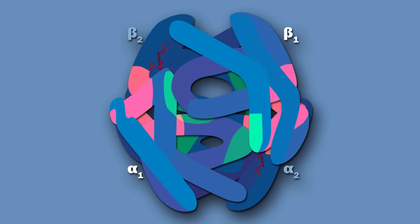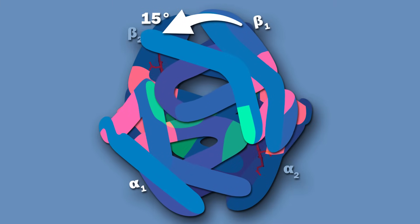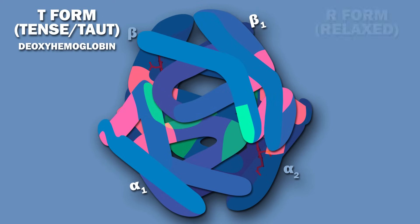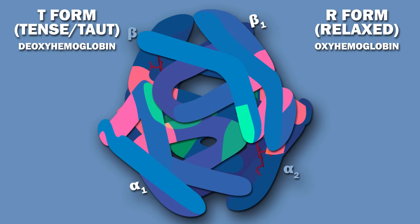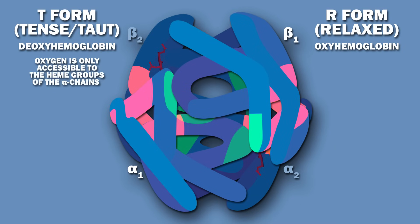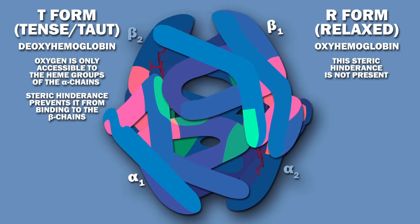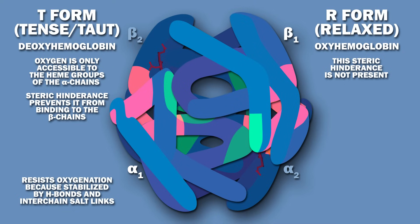When oxygen binds, the conformational change results in the dimeric halves rotating 15 degrees relative to one another. Hemoglobin's two conformations are called the T (for tense or taut) and R (for relaxed) forms. When hemoglobin is in the T form, oxygen is only accessible to the heme group of the alpha chains; steric hindrance prevents it from binding to the beta chains. This steric hindrance is not present in the R conformational state. Hemoglobin resists oxygenation because its deoxygenated T form is stabilized by certain hydrogen bonds and interchain salt links.